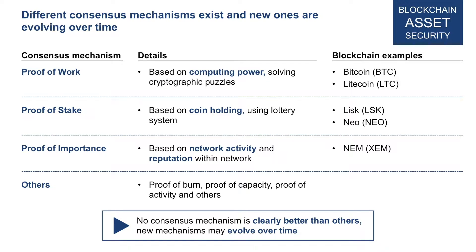A third consensus mechanism, introduced by New Economic Movement (NEM), is proof of importance. Here, decisions about who makes network decisions are based on network activity and reputation within the network. Simply put, the more useful you are to the network, the more say you have, determined by factors each blockchain can set for themselves. NEM is the coin that popularized this mechanism. There are also others like proof of burn, proof of capacity, and proof of activity — each with distinctive advantages and disadvantages.